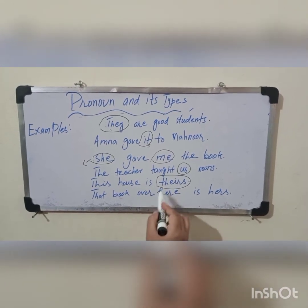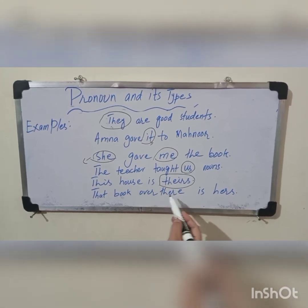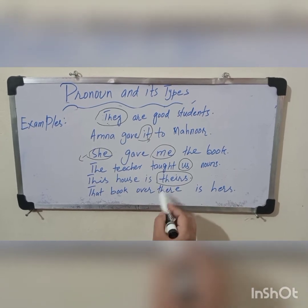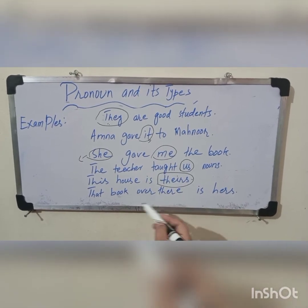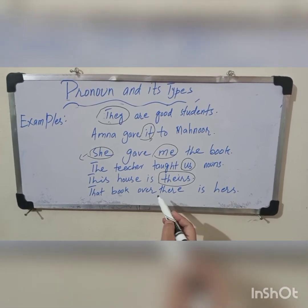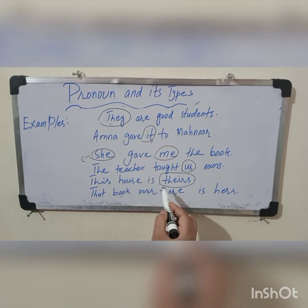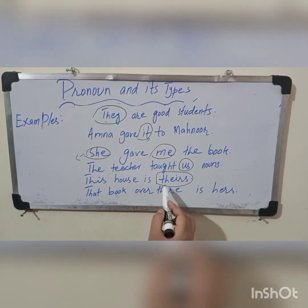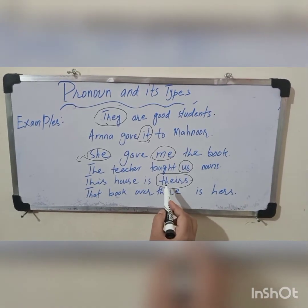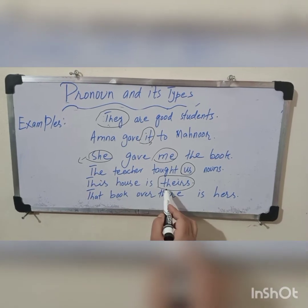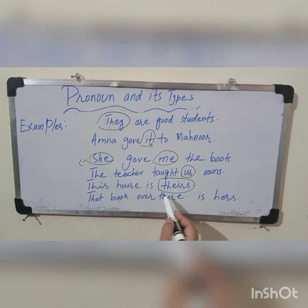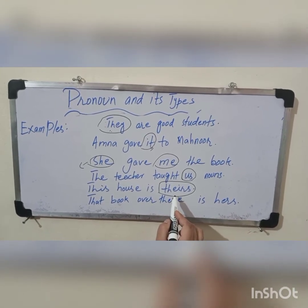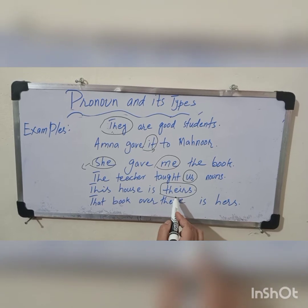Possessive pronouns ownership ظاہر کرتے ہیں — جیسے کہ یہ جو گھر ہے یہ ان کا ہے۔ جب آپ کسی چیز پر کسی کی position یا ملکیت ظاہر کرتے ہیں تو وہ pronouns possessive pronouns ہوتے ہیں۔ اس گھر پر ان کی ownership کو show کرنا — this is a possessive pronoun، جسے possessive case بھی کہتے ہیں۔